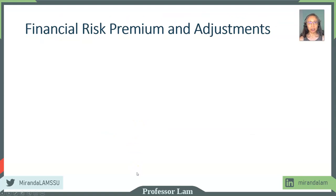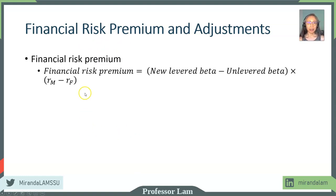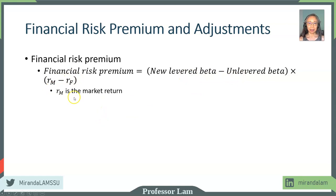Let's take a look at the role of financial risk in systematic risk. We can actually estimate directly the amount of premium — meaning the additional return that will be required because of the financial risk — if we take the difference between the levered beta and unlevered beta times the market risk premium. So this is the market return minus the risk-free rate, giving us the market risk premium, which is the price of risk. And that, of course, is the financial risk premium.